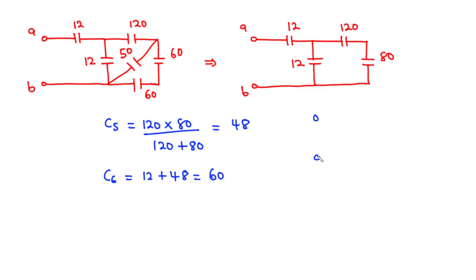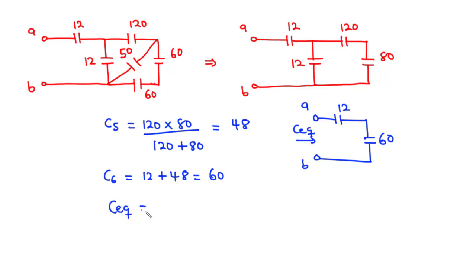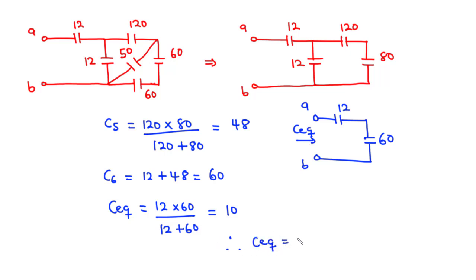Finally, we have 12 in series with 60. Therefore, the equivalent capacitance equals 12 times 60 divided by 12 plus 60 = 10 microfarads. The equivalent capacitance seen between the two terminals is 10 microfarads.